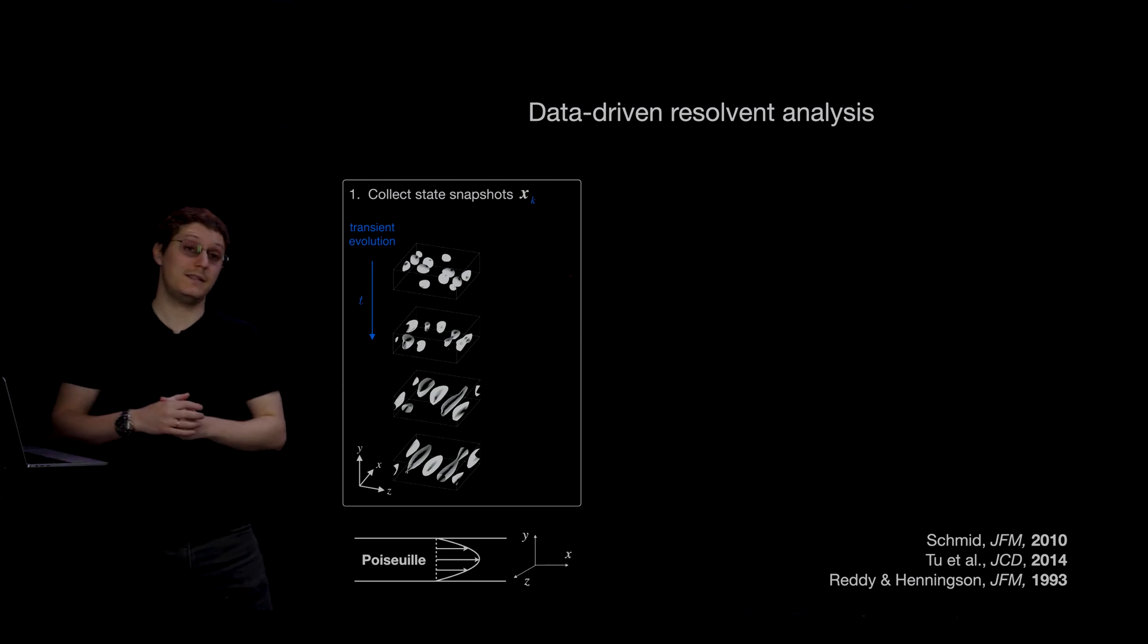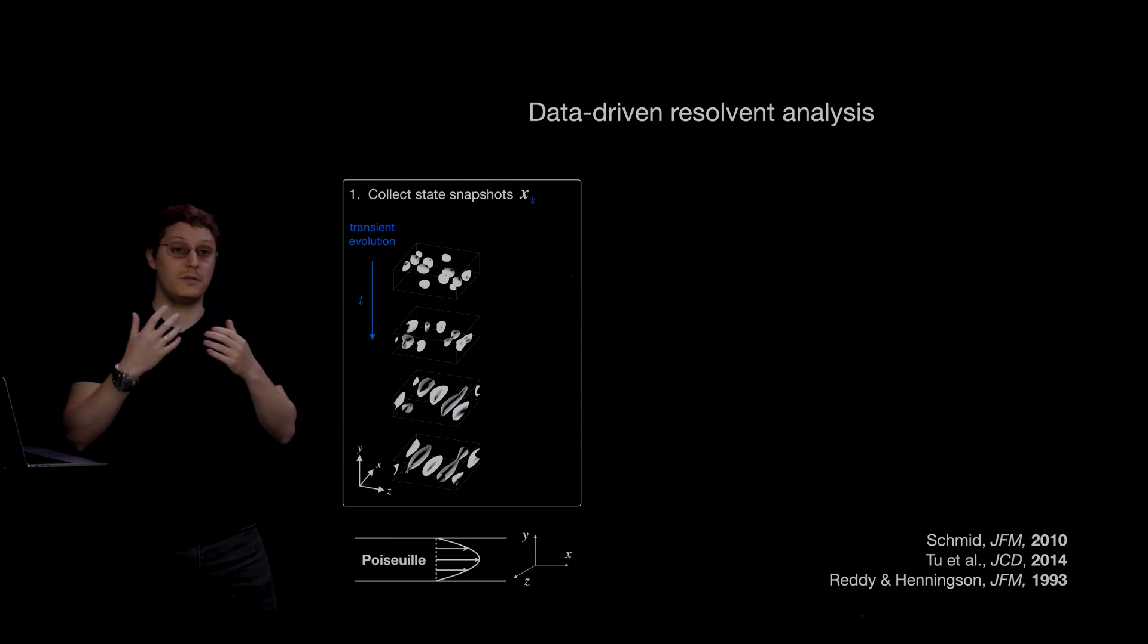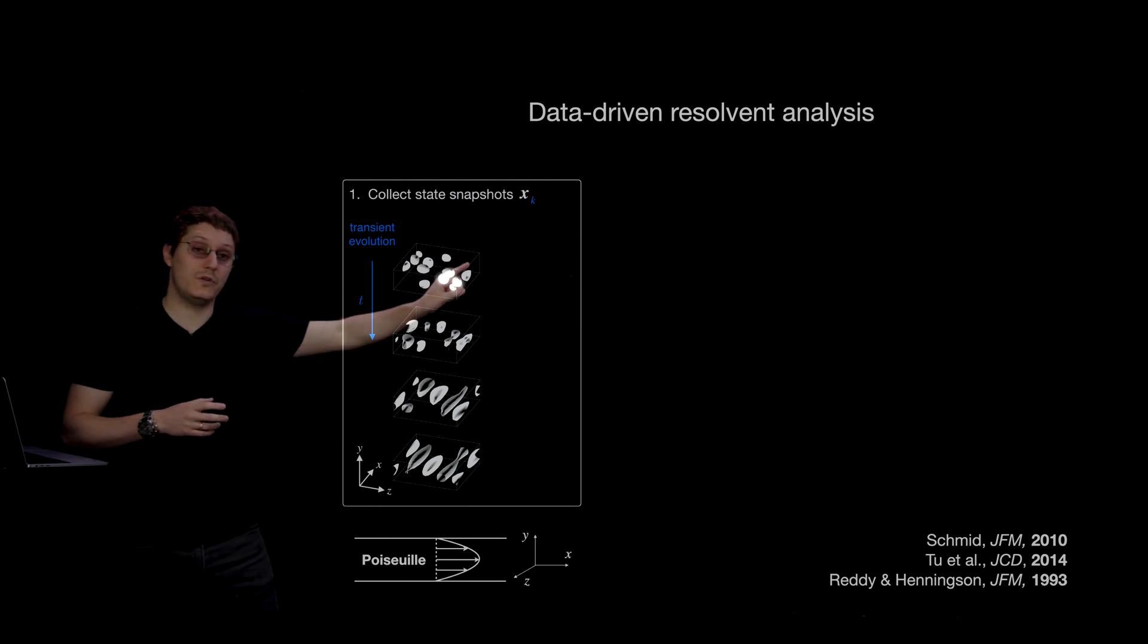So in this case, the state corresponds to the three velocity components in this three-dimensional flow field, which here I'm visualizing as velocity isosurfaces.